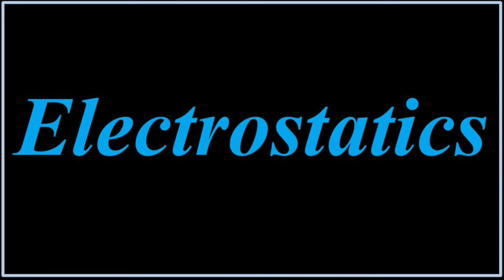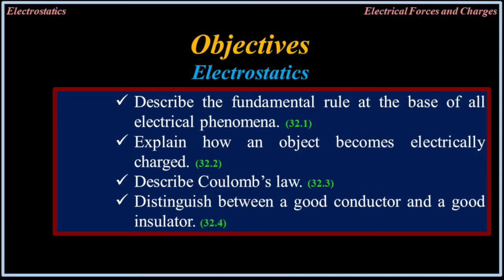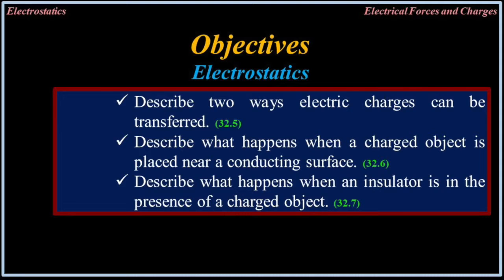Electrostatics. This chapter covers the following learning objectives: describe the fundamental rule at the base of all electrical phenomena; explain how an object becomes electrically charged; describe Coulomb's Law; distinguish between a good conductor and a good insulator; describe two ways electric charges can be transferred; describe what happens when a charged object is placed near a conducting surface; and describe what happens when an insulator is in the presence of a charged object.